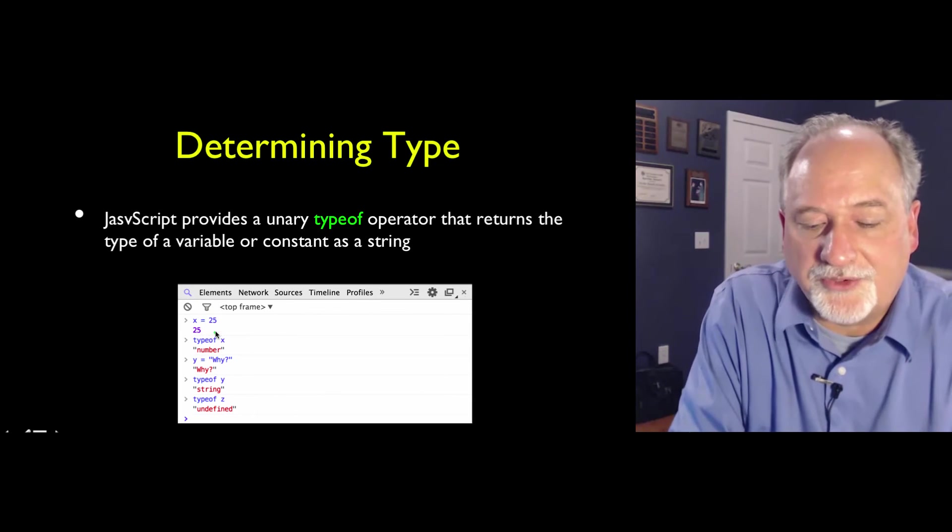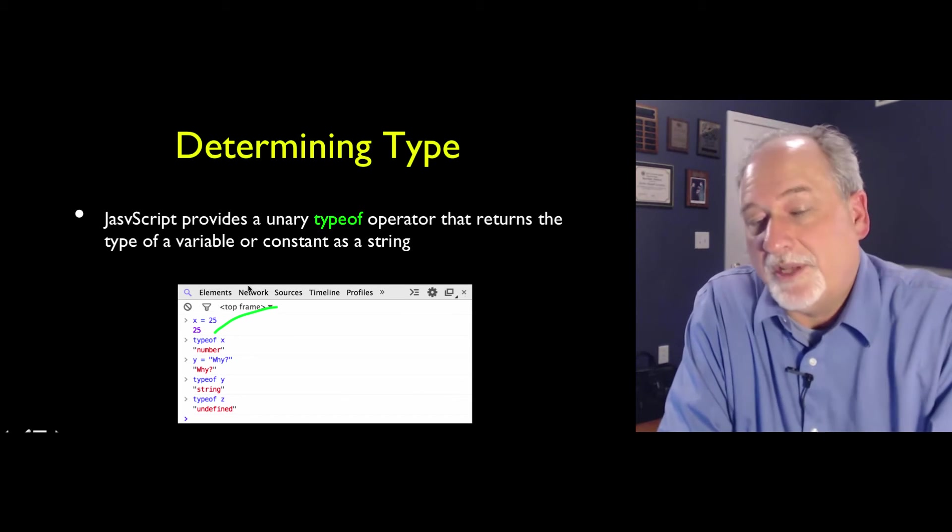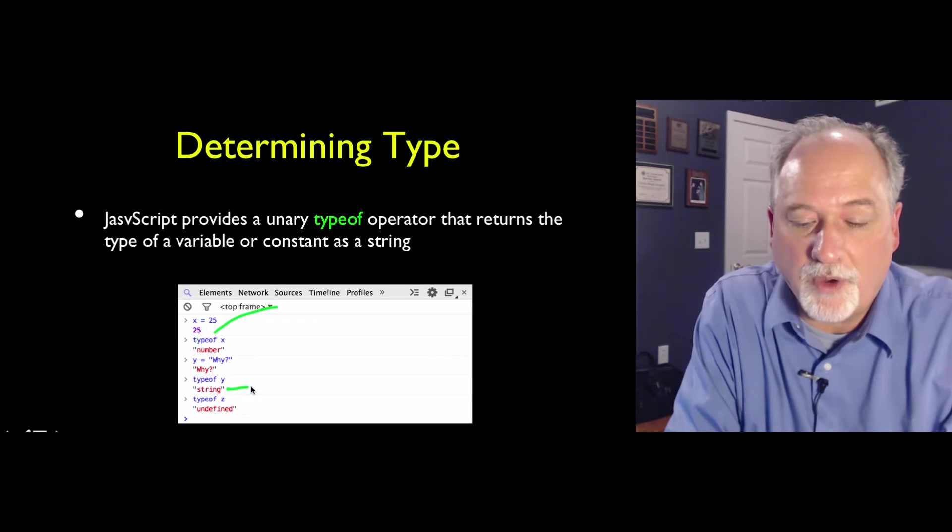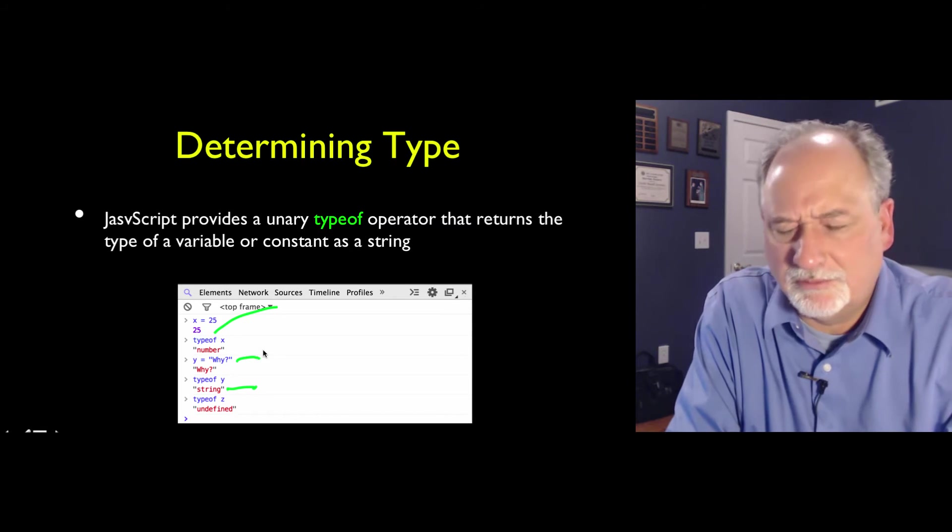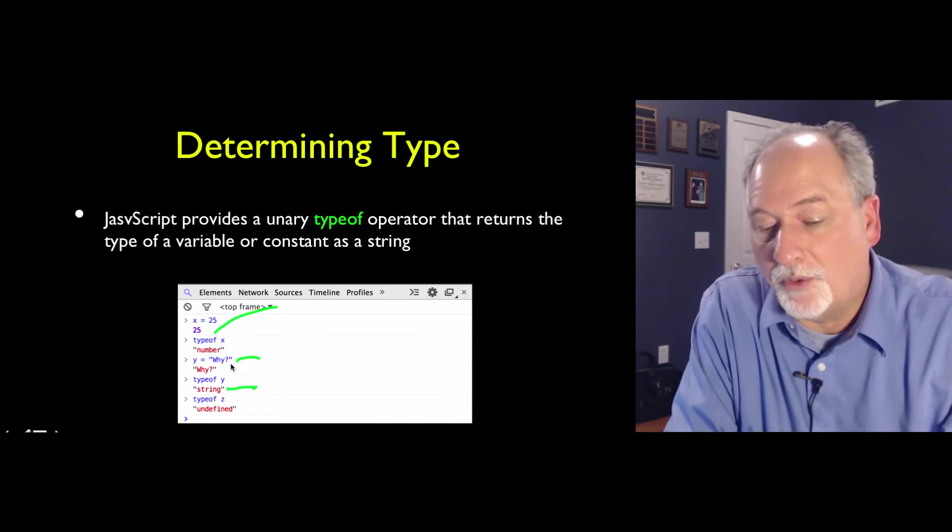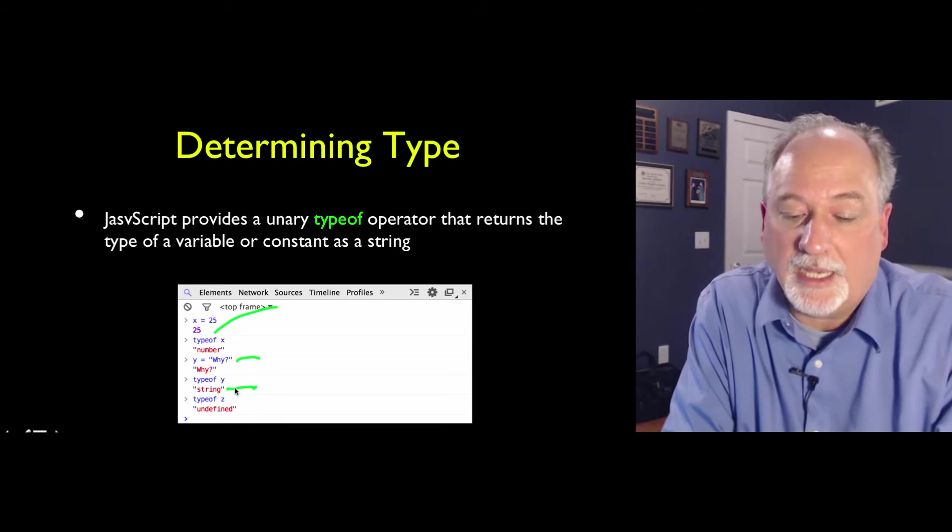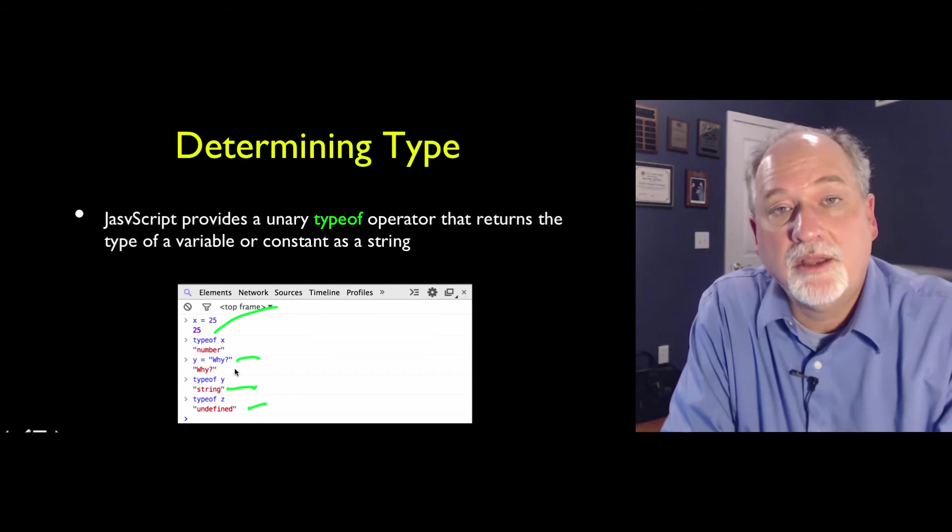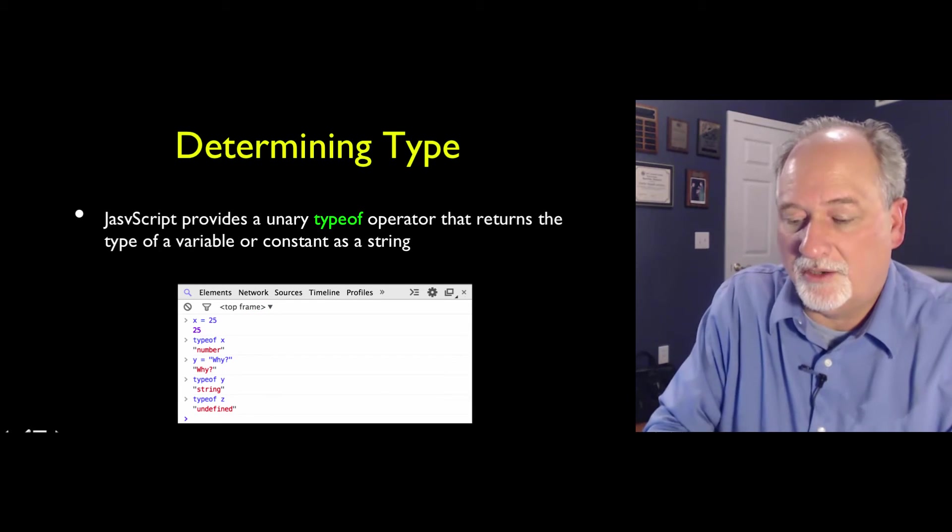There is an operator called typeof, which basically tells you what kind of a thing you've got. And it returns a string. And so typeof y, because that's crazy. Y is equal, quote, w-h-y question mark, and it is a string. And so you can check. And you can also find out if something is undefined by looking at the type of an undefined variable.